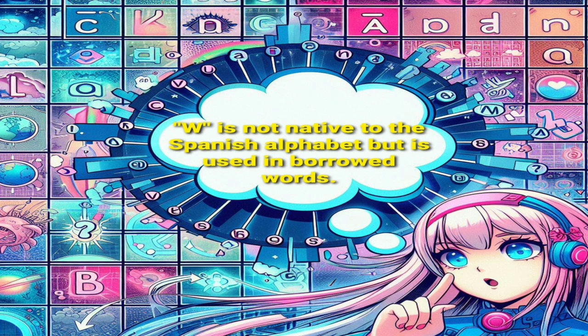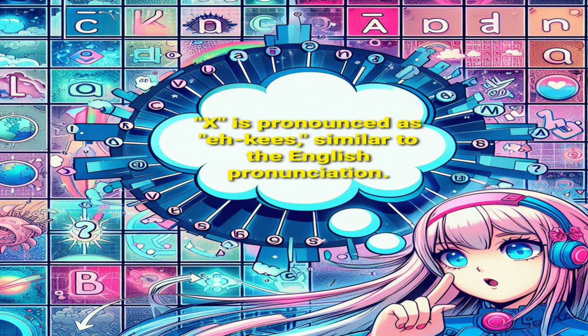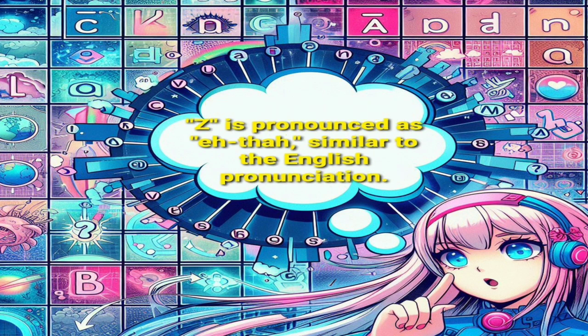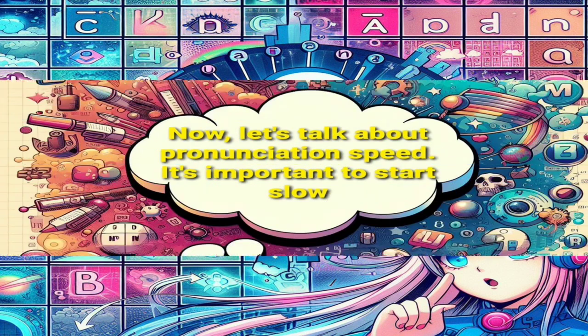W is not native to the Spanish alphabet, but is used in borrowed words. X is pronounced as 'equis', similar to the English pronunciation. Y is pronounced as 'ye', similar to the English pronunciation. Z is pronounced as 'zeta', similar to the English pronunciation.